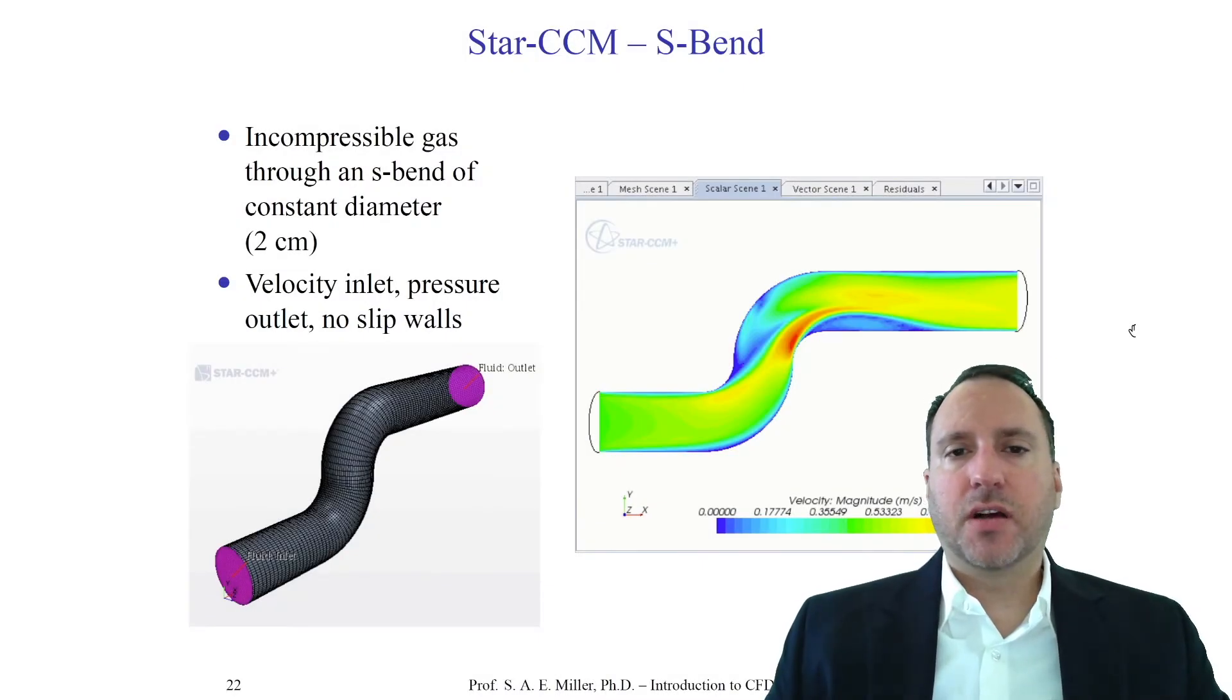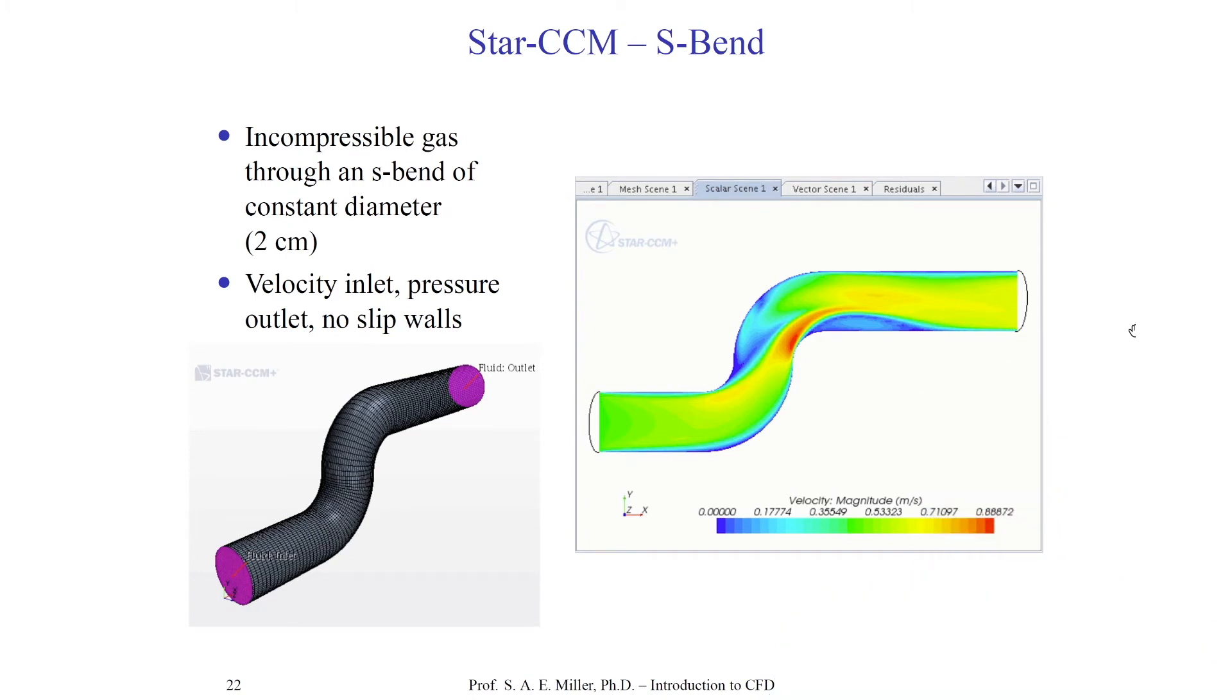Another example from the star solver is the so-called S-bend. This is one of their classic tutorials. You can see the solution on the right. The flow moves from left to right here, and they've plotted the contours of velocity and magnitude. Here, in the single solver, they have produced a solution and visualized the results all within the same program. That's rather convenient and something people like about commercial solvers. It's an incompressible case of a diameter of two centimeters. Here, they've specified on the left and shown the computational domain of a fluid inlet and outlet. They have a velocity inlet and a static pressure outlet. The boundary conditions are the velocity inlet, static pressure outlet, and no slip walls. You can see the solution on the right and the grid on the left. This is a very simple and straightforward case. You've already seen examples of this earlier.